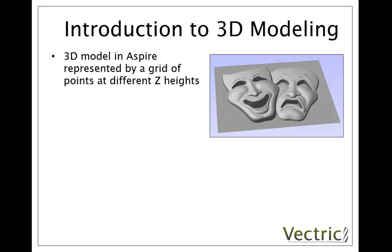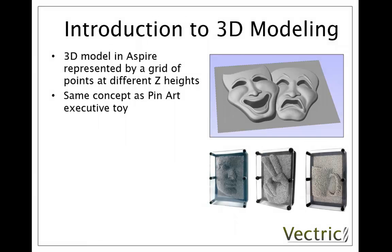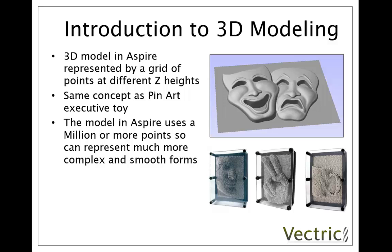Firstly let's think about how we represent the 3D data. Essentially what you're looking at when you look at an Aspire model is a grid of points, each one of which is at a different Z height. The concept is essentially the same as these executive toys where we have the pins and you can push a 3D shape into them and see that represented by the different heights of the pins being pushed up. The difference in Aspire though is we're using a million or more points so we can represent a much more complex and smooth form and we don't really see each individual location.